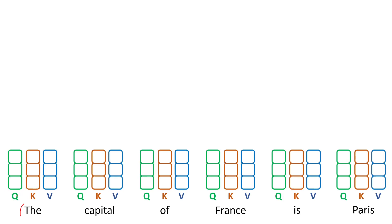The first one is the query vector, the second one is the key vector, and the third one is the value vector.